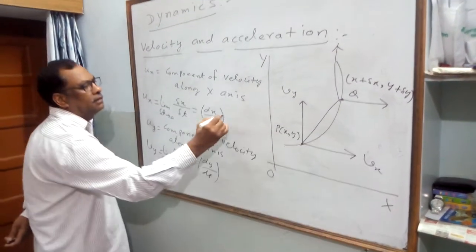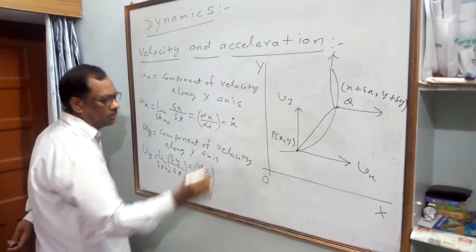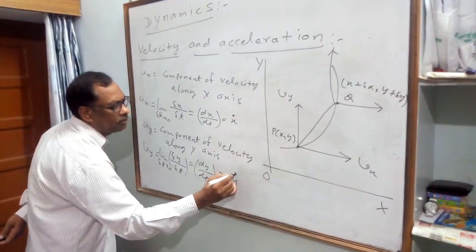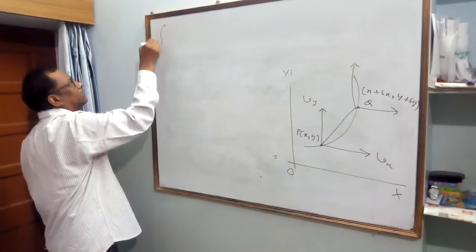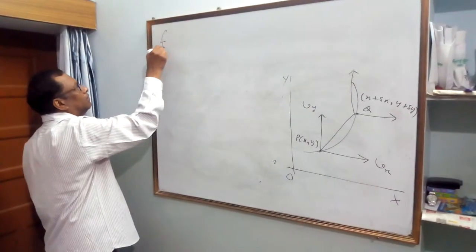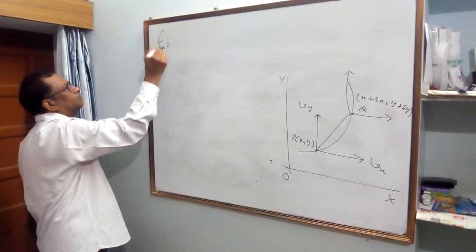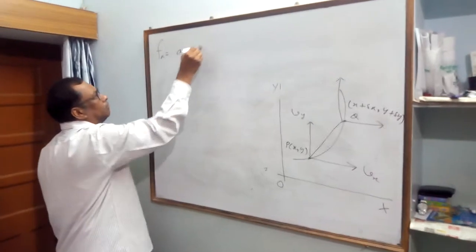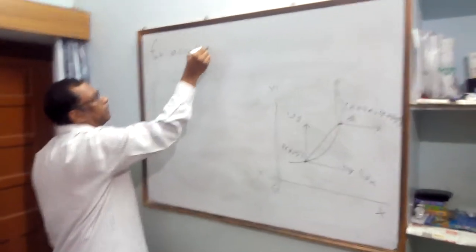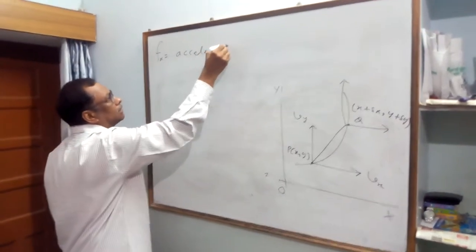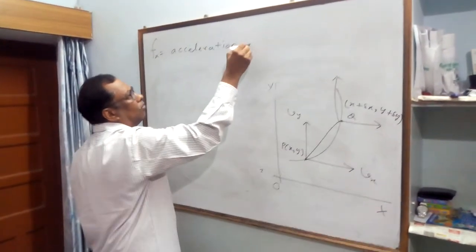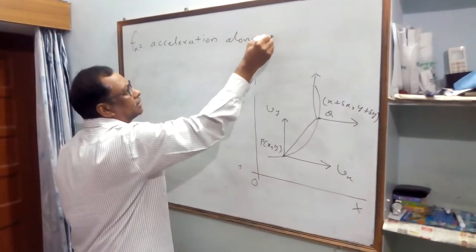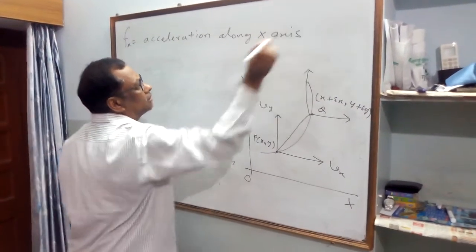Vx is also known as x-dot; Vy is known as y-dot. Acceleration: Fx is acceleration along the X-axis.